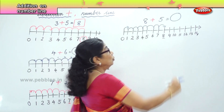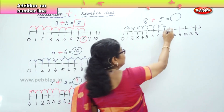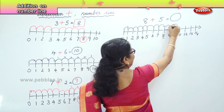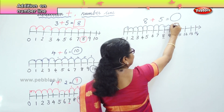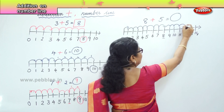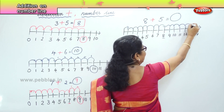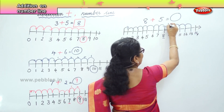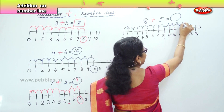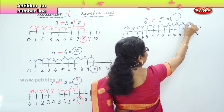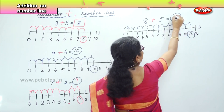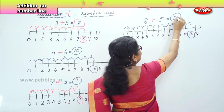Eight plus five. Now we have to do five more jumps from here. One, two, three, four, and five. One, two, three, four, five. And we get the answer as thirteen.